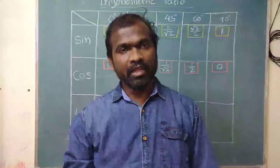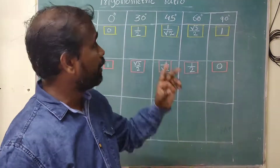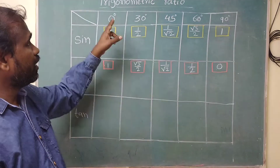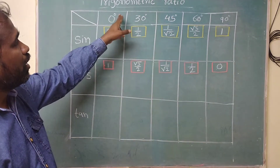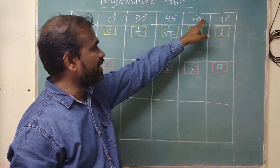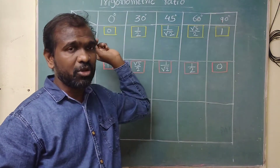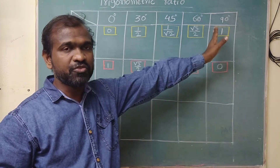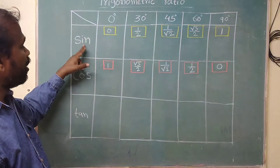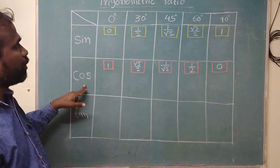Hello students. In this video we will see how to remember trigonometric ratios in the easiest way. Here I have written 0°, 30°, 45°, 60°, 90°. I have selected these angles because these are the standard angles which we normally use in calculations. Here we will see how to calculate sine and cosine ratios.